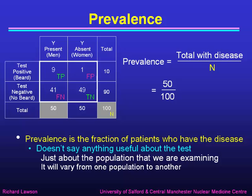Naturally, prevalence will vary from one population to another. In this sample, I have a prevalence of 50 percent taken from the general population, since about 50 percent of the general population are men. But I could have sampled a different population with mostly men or very few men. Prevalence doesn't tell us anything about the test, but it does say something useful about the sort of people we're examining.